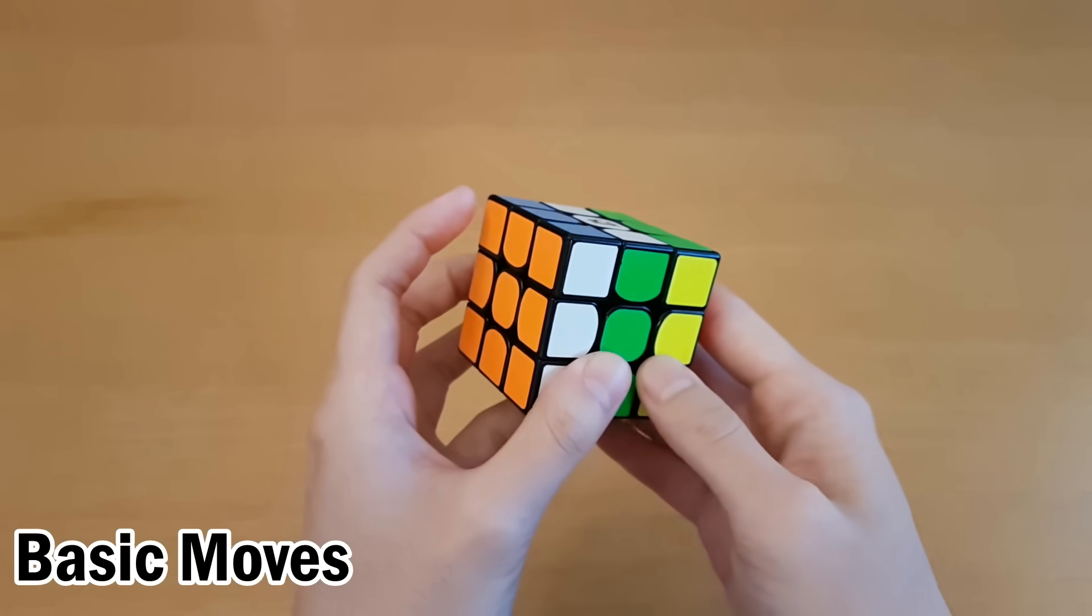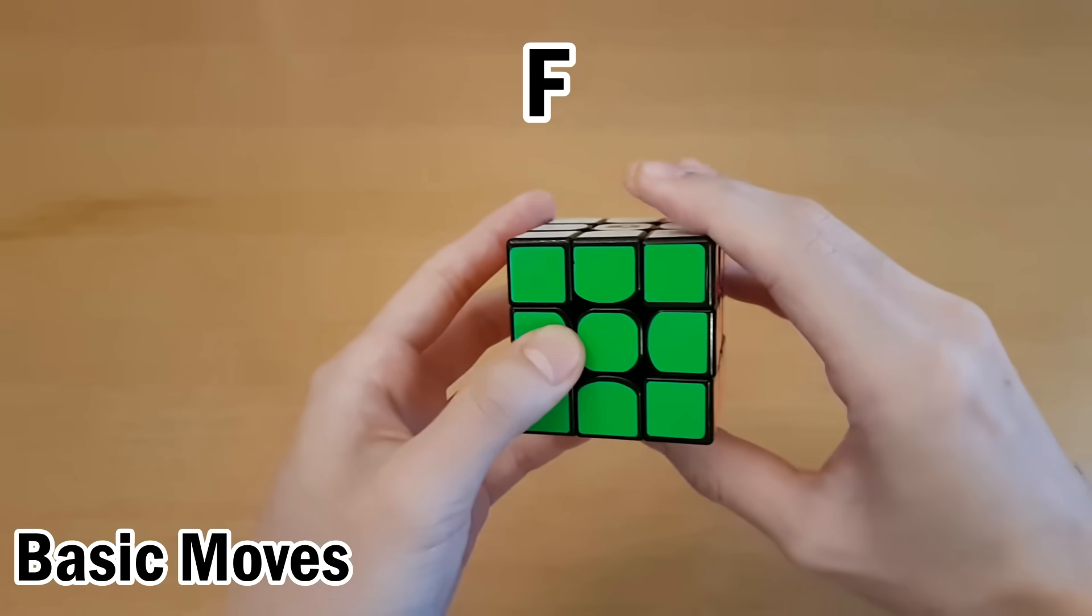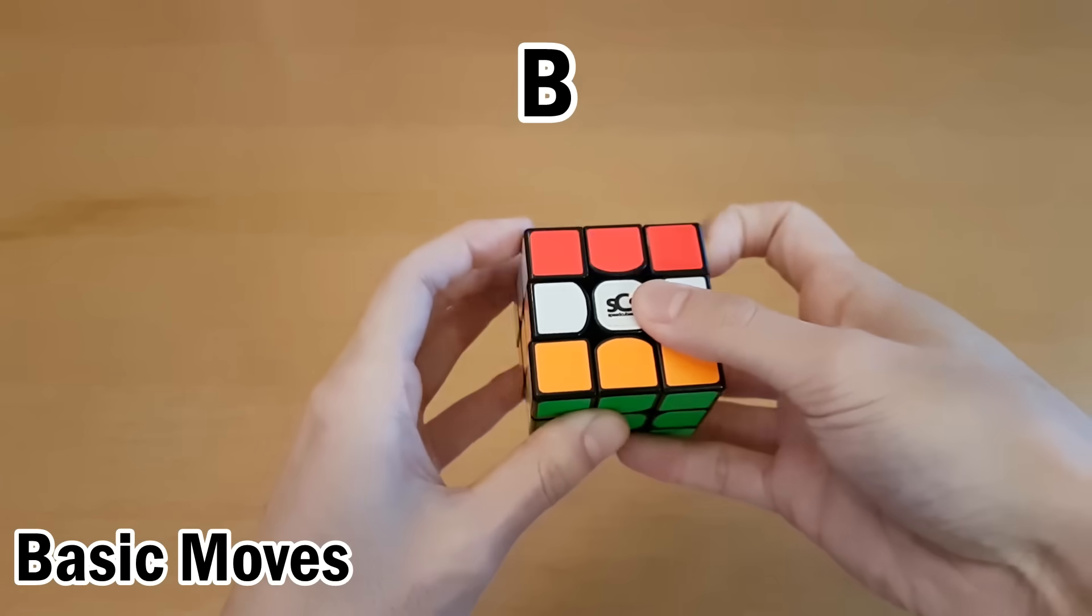Instead think that they each mean a clockwise turn. U goes this way, D goes this way, F goes this way, and B goes this way.